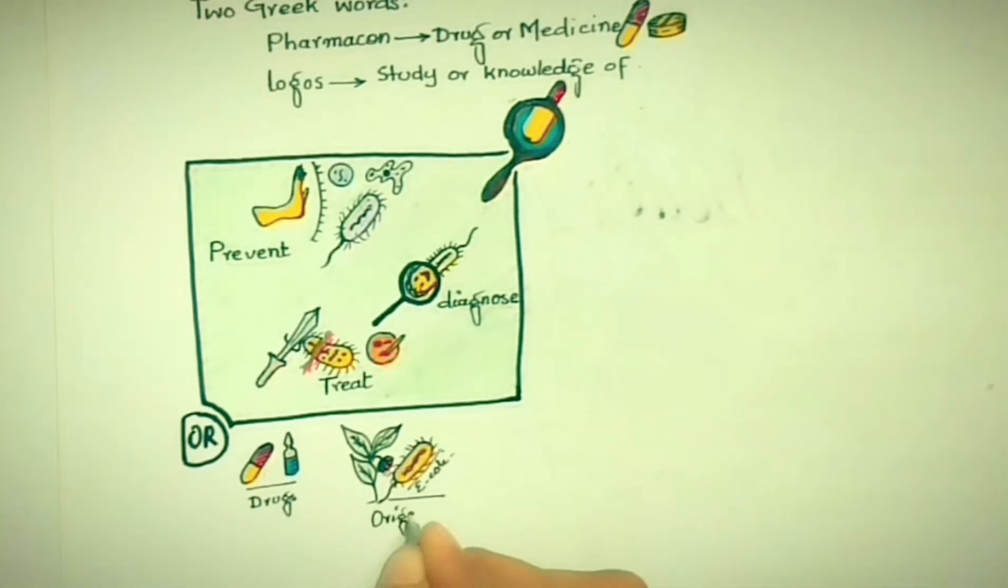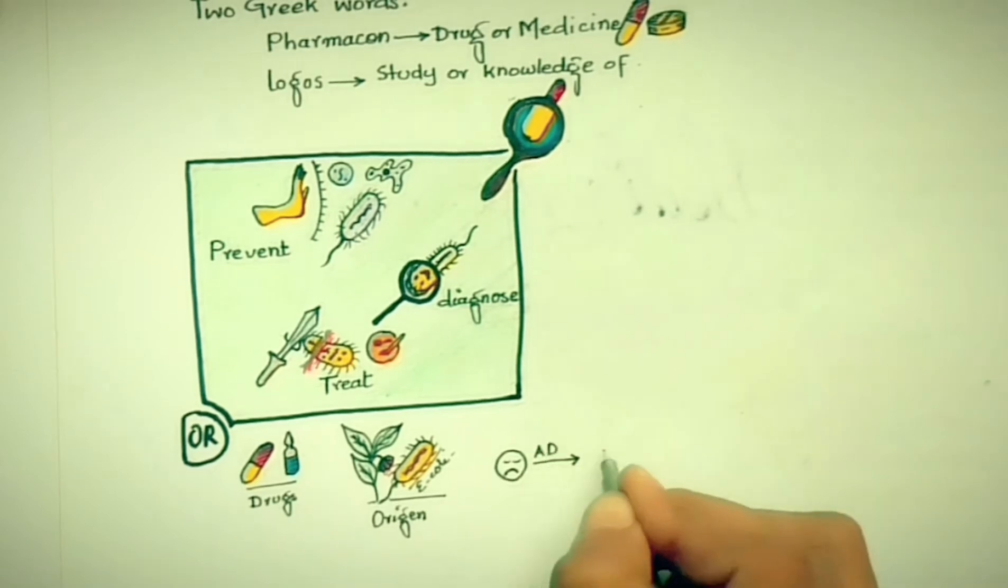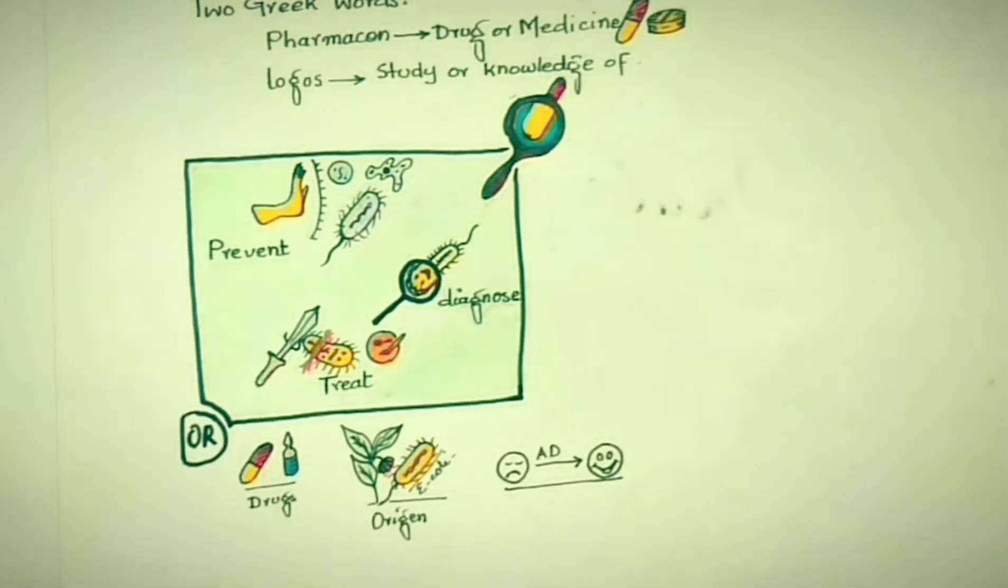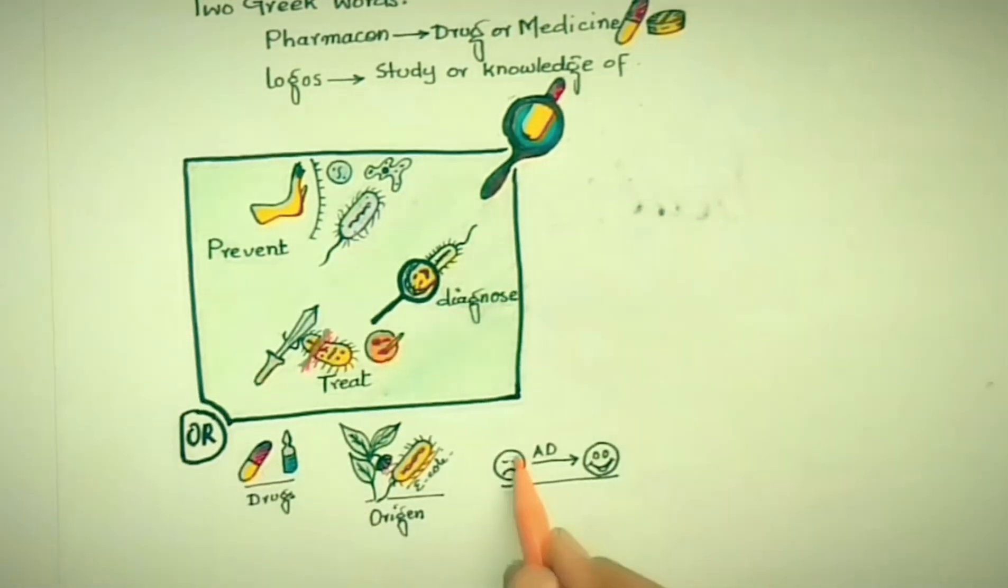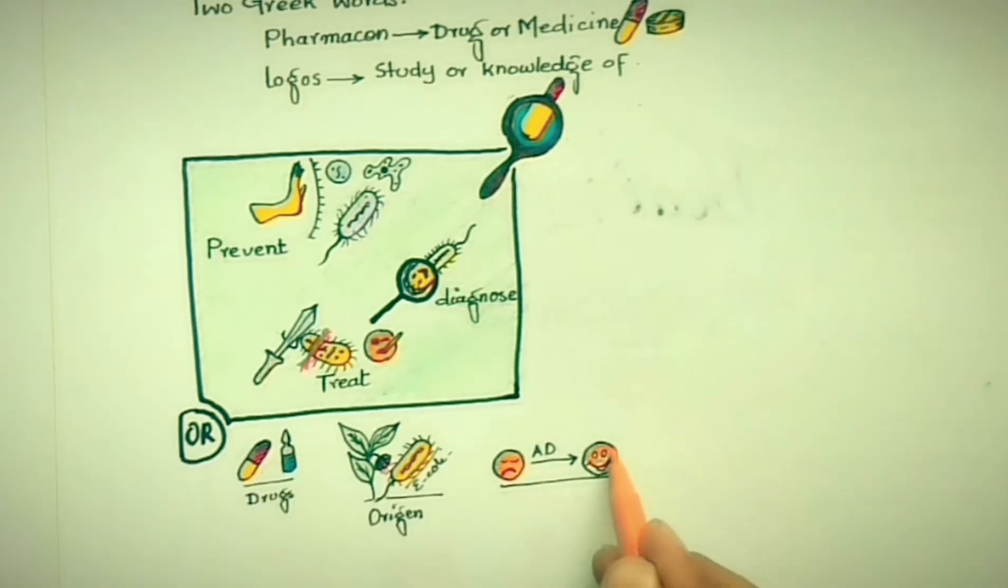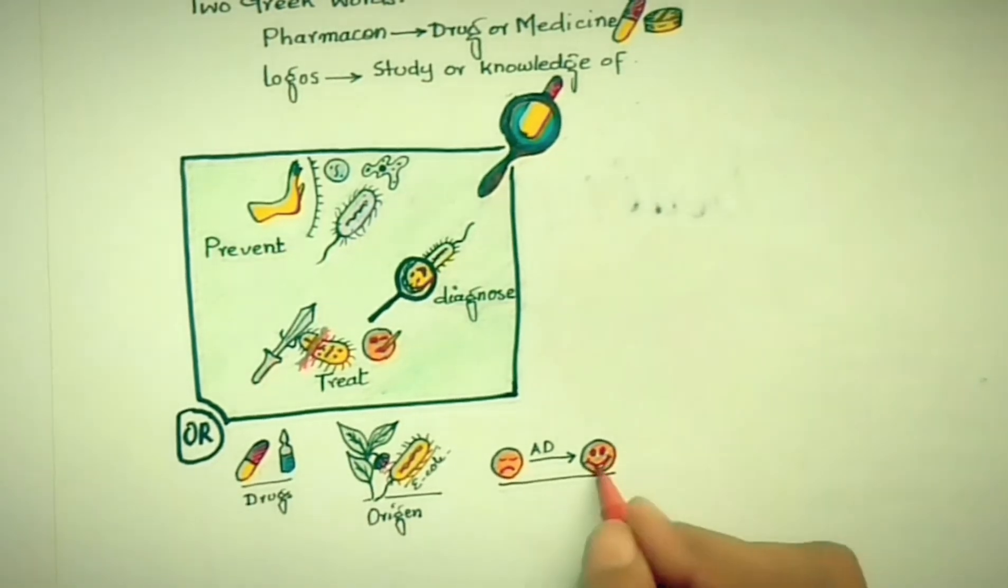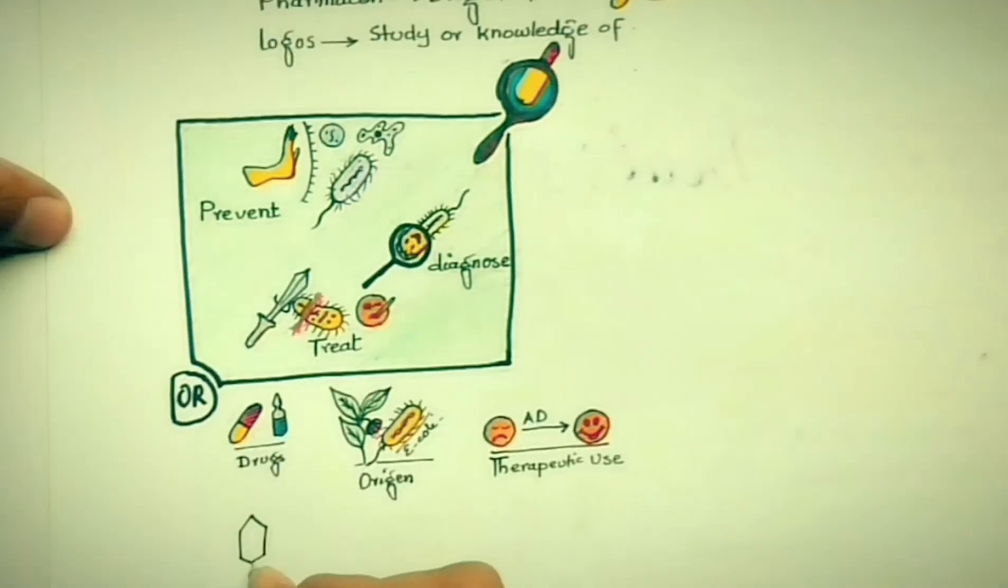The second term in the definition is therapeutic use—for example, which condition the drug is used for. Antidepressants are used for depression, and anxiolytics are used for anxiety.